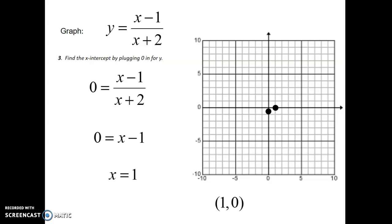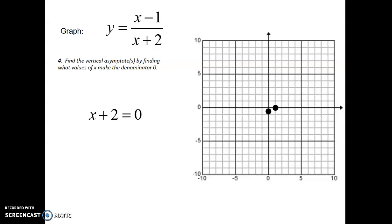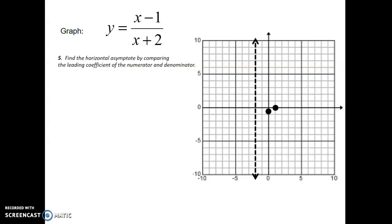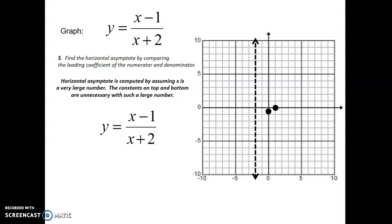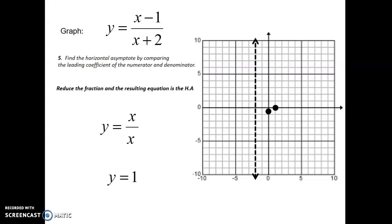Step four is the vertical asymptote. Take the denominator x plus two, set it equal to zero, and solve for x, giving x equals negative two. Draw a dashed vertical line through negative two — this is the boundary the graph can never go through. Step five, the horizontal asymptote. Look at the leading coefficients: x over x equals one. So the horizontal asymptote is at y equals one, drawn as a dashed line.